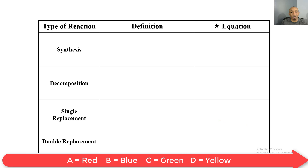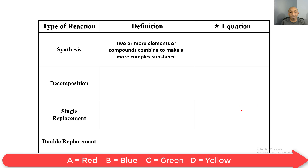Now let's do our overall review. The definition for synthesis: two or more elements or compounds combine to make a more complex substance, and the equation is A plus B yields AB. For decomposition, compounds break down into simpler substances, and the equation is AB yields A plus B.